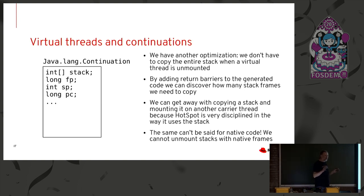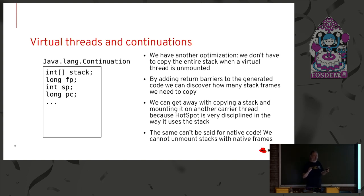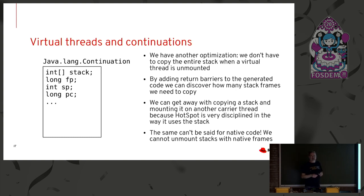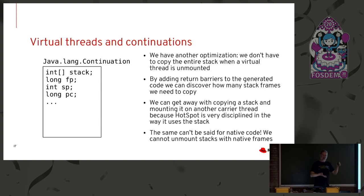At that point you start to see why this is a cheap operation. Java stack frames are small — small because you don't have local strings, you don't have local arrays. All that a Java thread has are local variables, and local variables are always either scalars or references to an object somewhere else. So the frames are small. Copying them on and off when we unmount is pretty cheap.